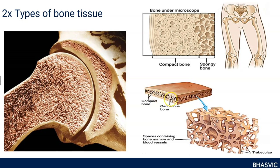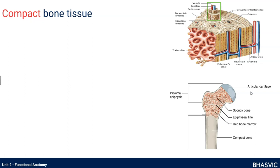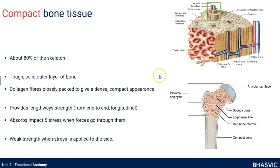It's almost like a sandwich — the cancellous bone is the honeycomb structure in the middle, and we've got this tough outer compact bone on either side. About 80% of our skeleton is made of compact bone tissue. It definitely lines the outside of the diaphysis. It's a tough, solid outer layer of bone, really packed with collagen fibres, which makes it dense, strong, and compact. It gives our long bones strength lengthways — absorbing impact and stress when forces go through them.